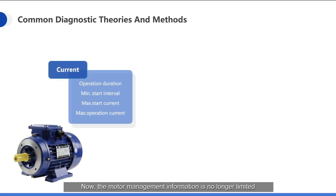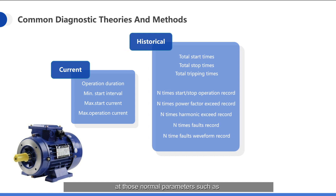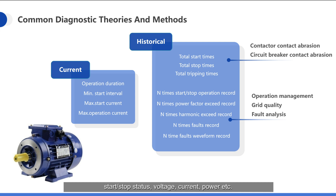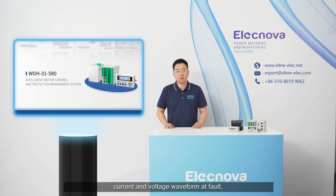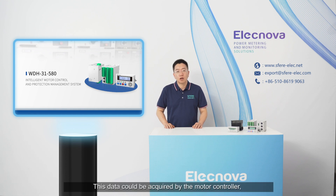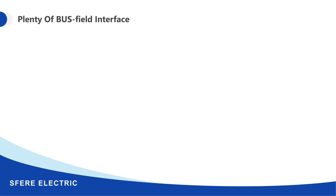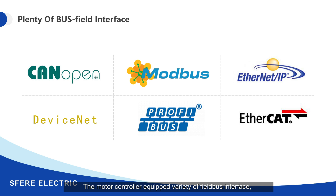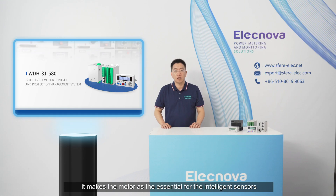Motor management information is no longer limited to normal parameters such as start/stop status, voltage, current, and power. People are now concerned with the power distribution quality of the motor circuit, current and voltage waveforms at fault, and statistics on the wear rate of the contactor. This data can be acquired by the motor controller, providing simple and accurate motor management to enhance the service life of the motor. The motor controller is also equipped with a field bus interface, making the motor an essential intelligent sensor for the digital factory.